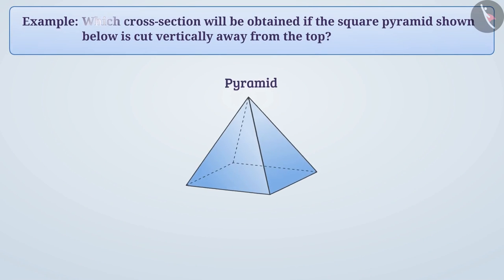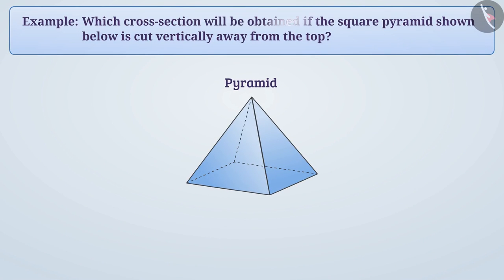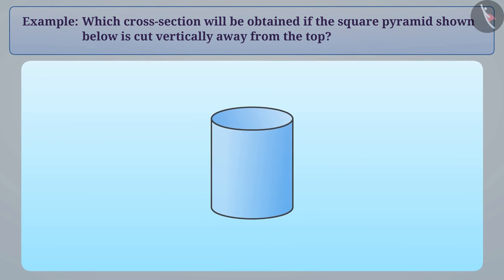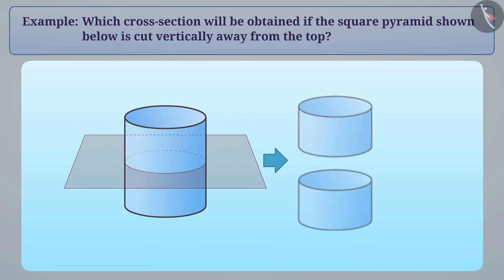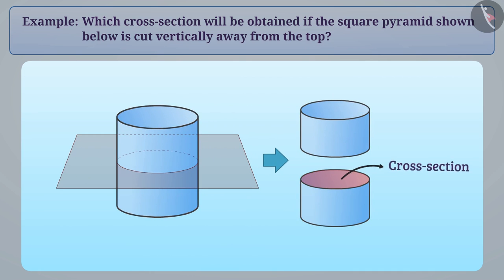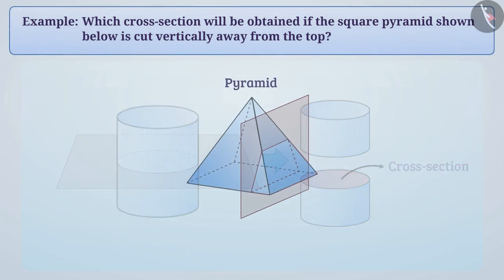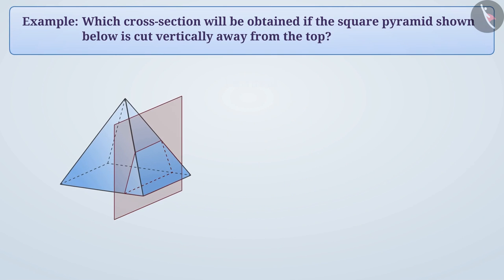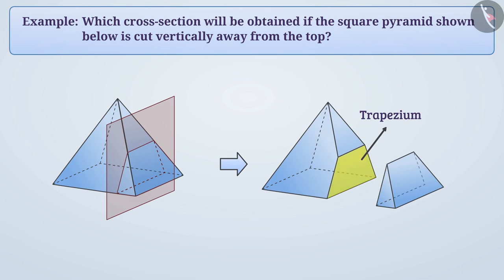Which cross-section will be obtained if the square pyramid shown is cut vertically from the top? When we cut a three-dimensional shape along one direction, the face we get is called a cross-section. If we cut the square pyramid vertically from the top, this gives us a trapezium-shaped face — that is, we get a trapezium-shaped cross-section of the square pyramid.